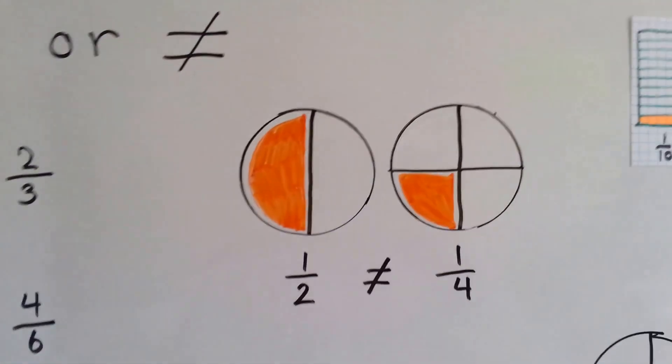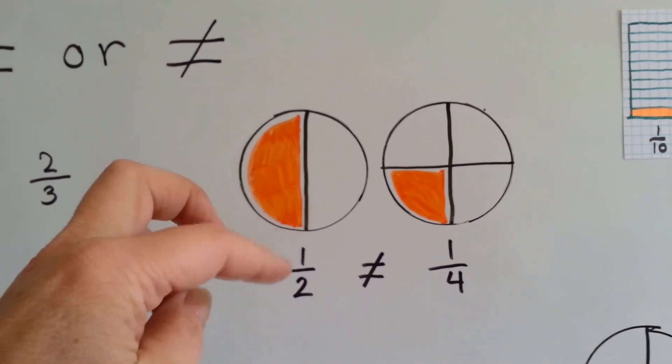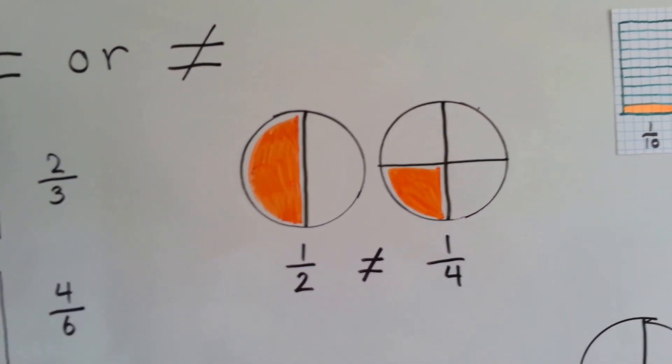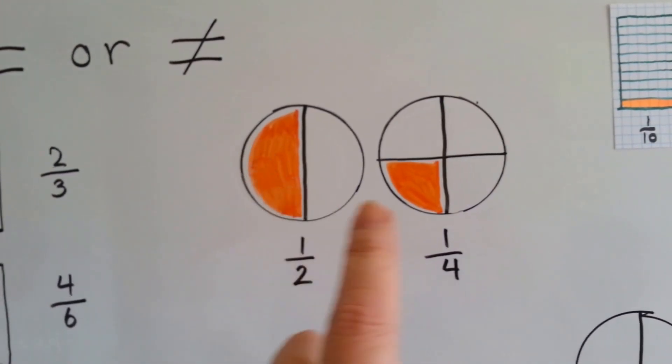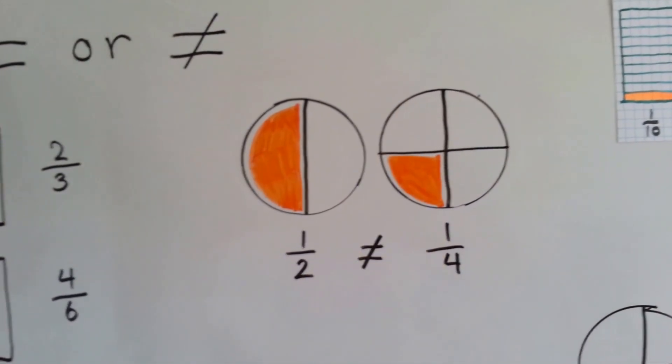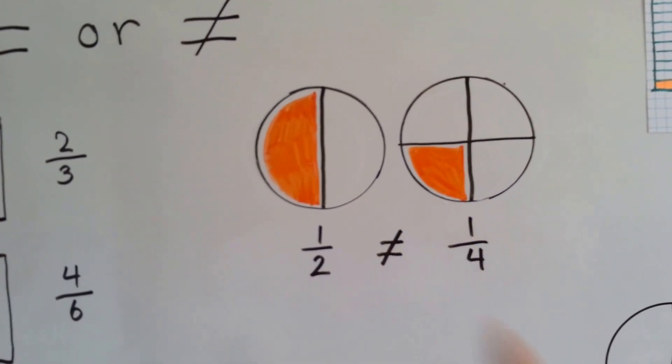Let's look at the circles. Half the circle is colored orange. One fourth of the circle is colored orange. They are not equal. More of this is orange than this one. This top part would have to be colored orange in order for them to be equal. So they're not equal.